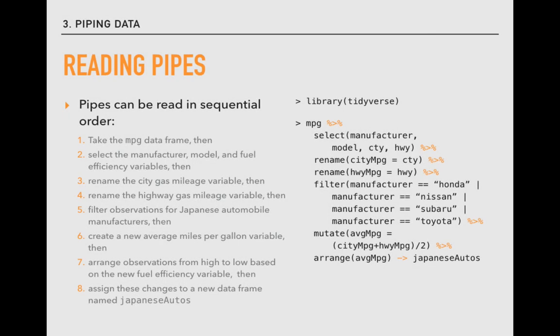Pipes can also be read like lists. For example, we can read through this list of actions where we, one, take the MPG data frame, then two, select the manufacturer, model, and fuel efficiency variables, then three, rename the city gas mileage variable, then four, rename the highway gas mileage variable.